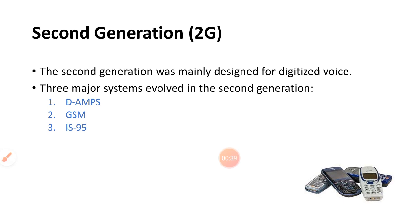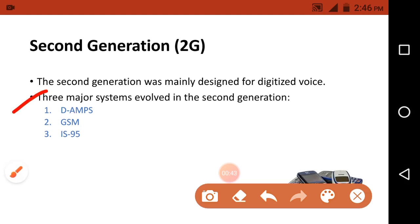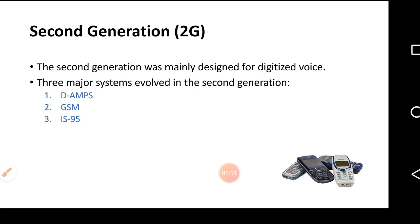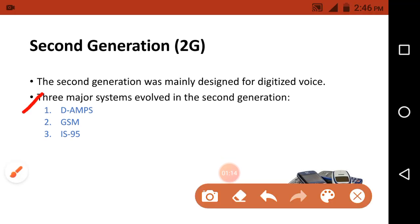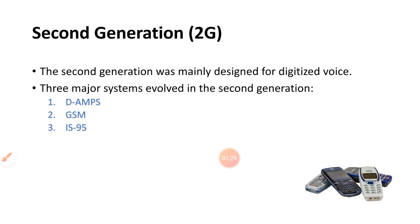There are three major systems involved in the second generation. The first one is D-AMPS, which stands for Digital Advanced Mobile Phoning System. The next one is GSM, Global System for Mobile Communication, and the last one is IS-95. In this video lecture we will first discuss the first two systems: D-AMPS and GSM. IS-95 will be discussed in the next video lecture.